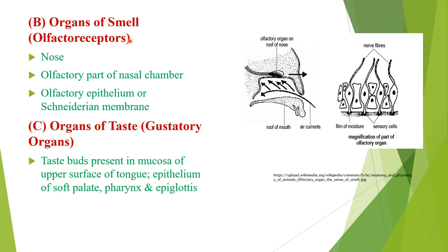Next are the organs of smell, called olfactoreceptors. The main organ is the nose, and the olfactory part of the nasal chamber is associated with the sense of smell. The olfactory organs are present at the roof of the nose. This part is sensory and made up of olfactory epithelium, which is glandular and columnar. The olfactory epithelium is also called the Schneiderian membrane and is supported by olfactory cells having sensory cells and nerve fibers in their endings.